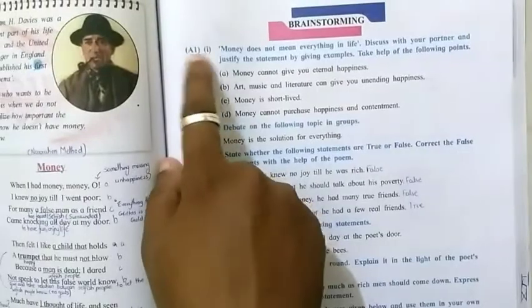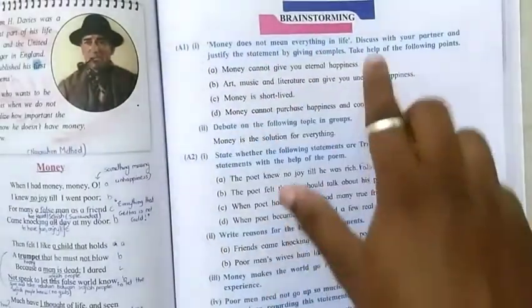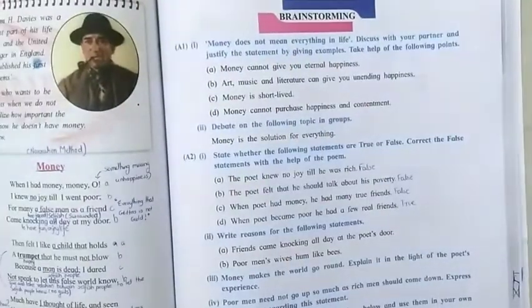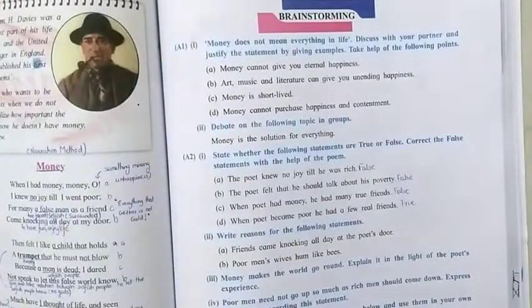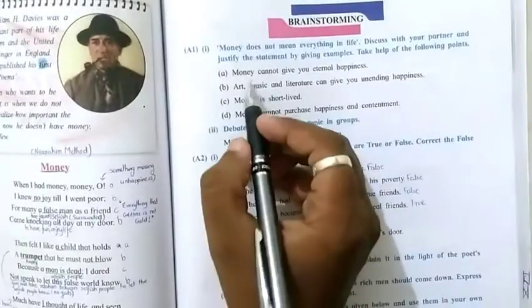Now the first question is A1. Money does not mean everything in life. Discuss with your partner and justify this statement by giving examples. Take help of the following points. In this question, some points are given to you.